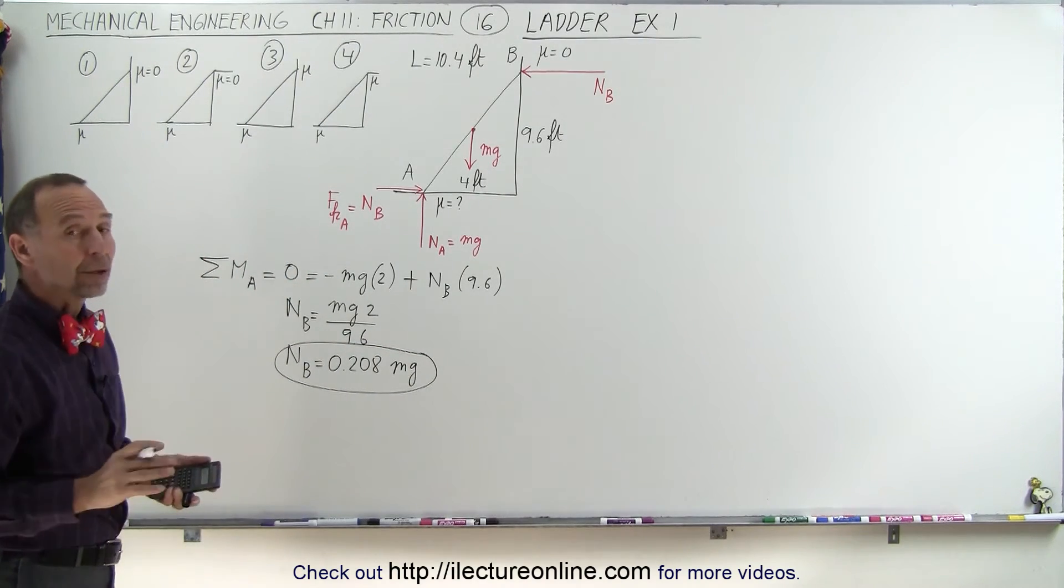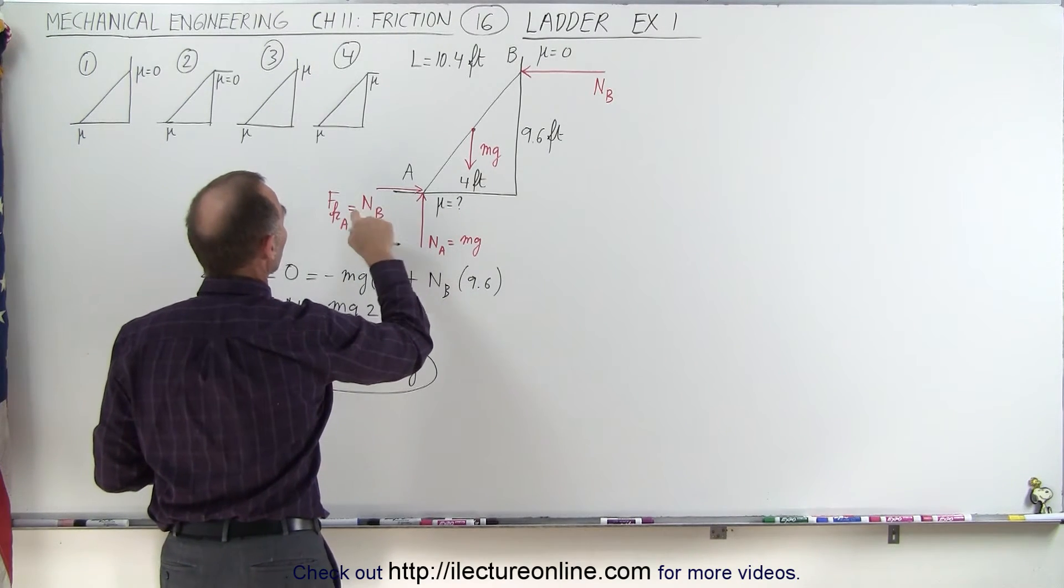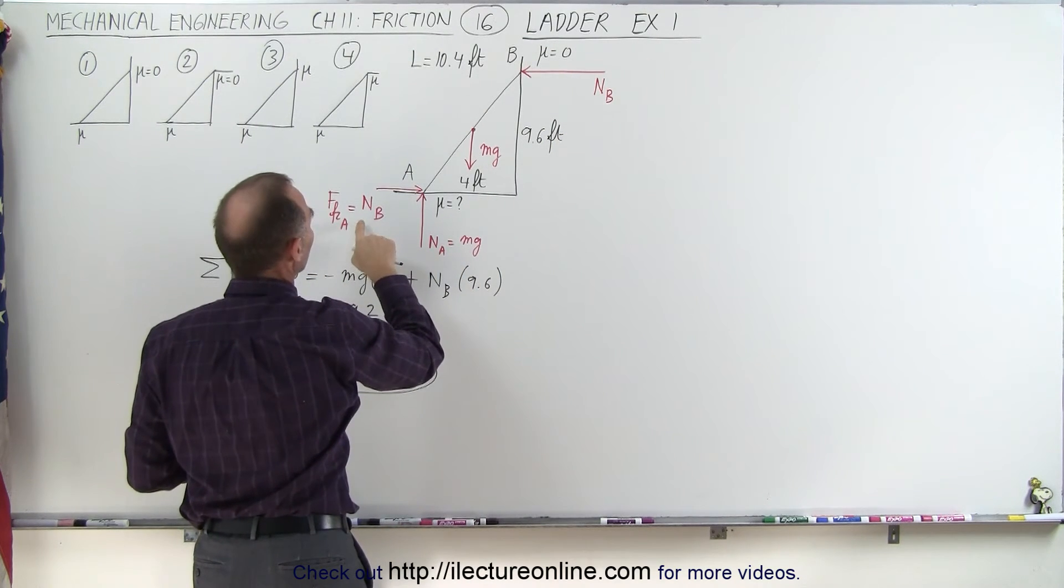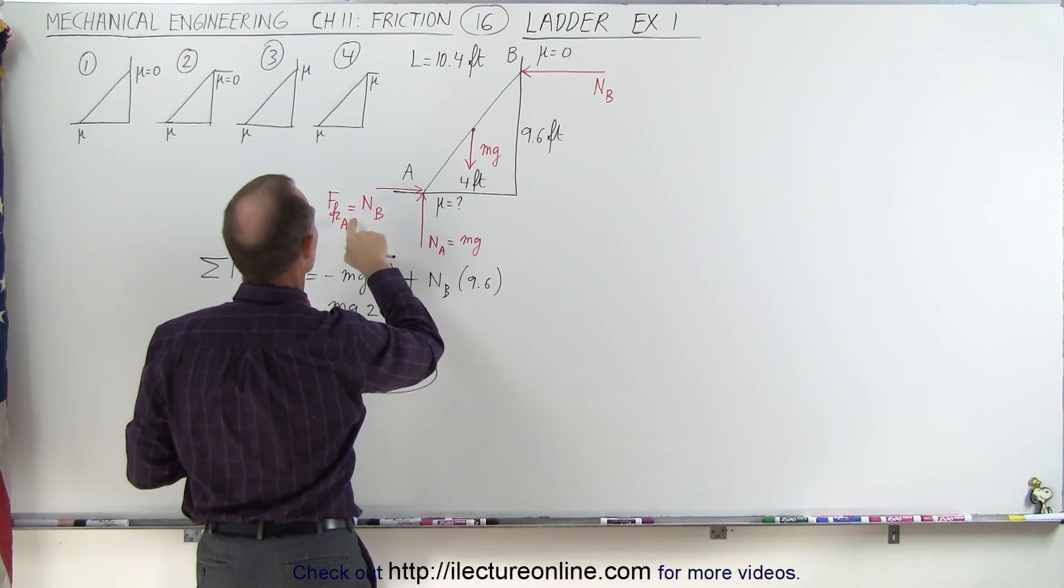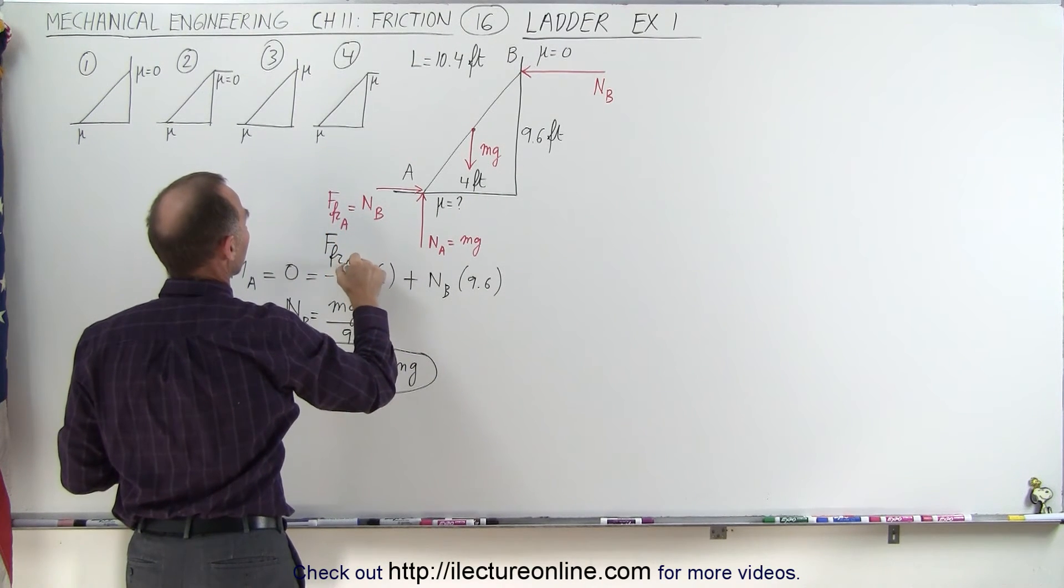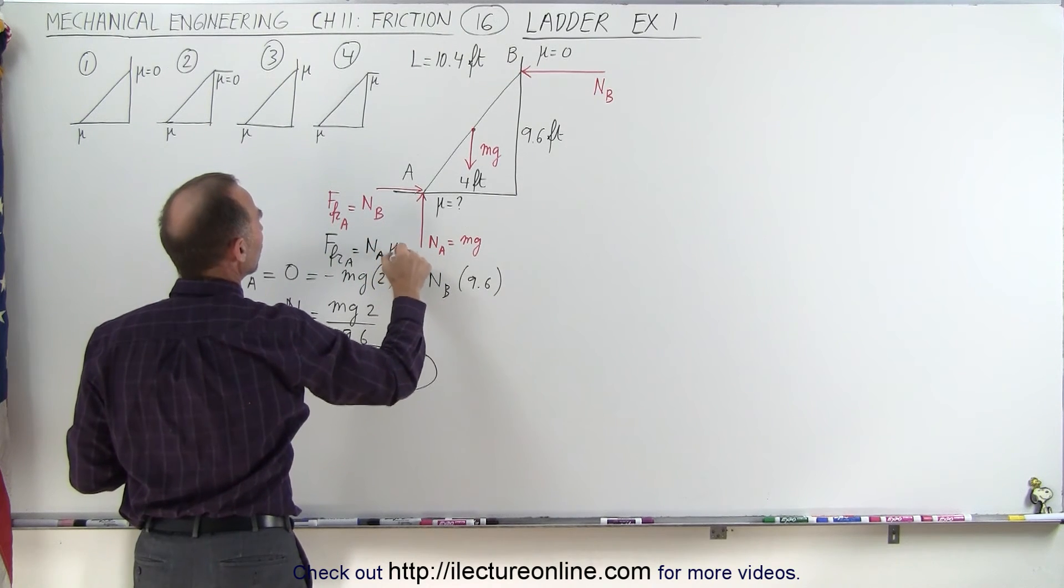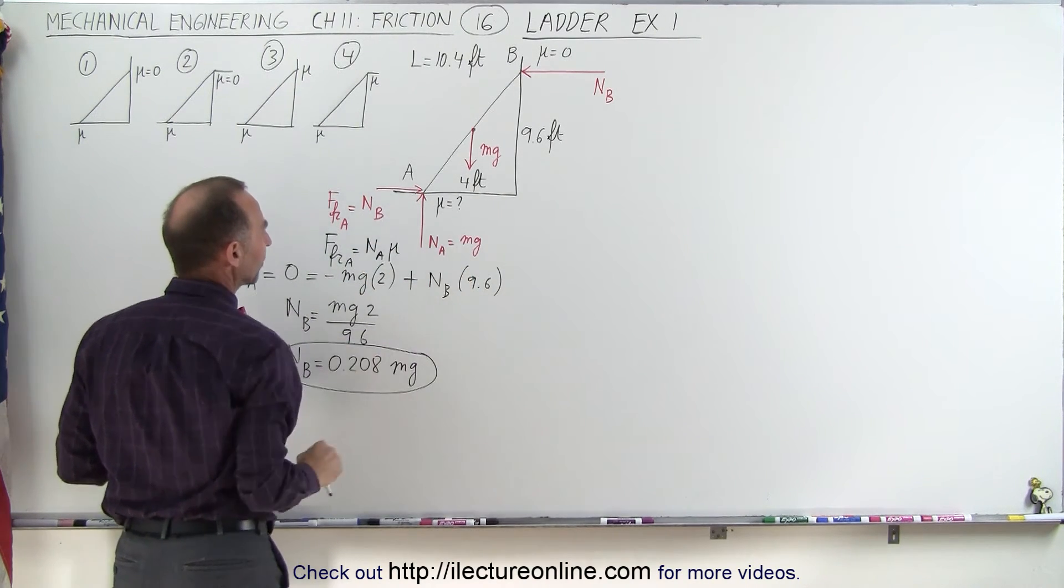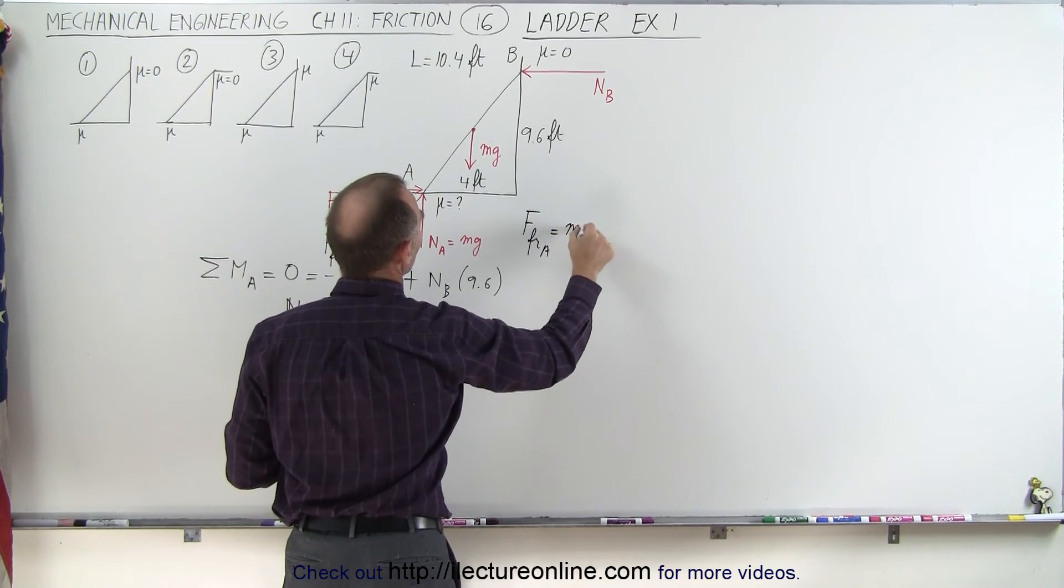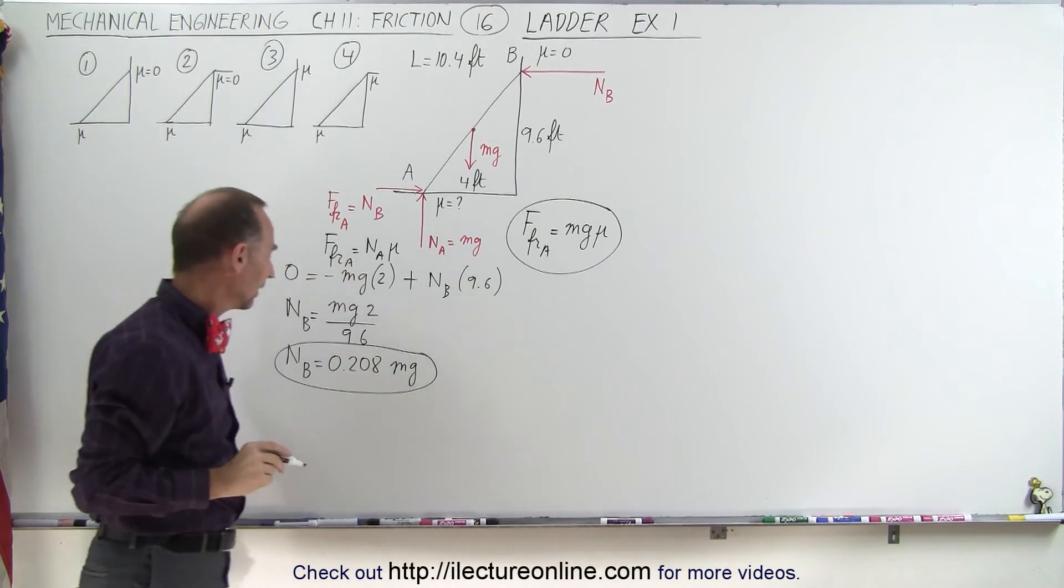Okay, from that, we can now go to the sum of all the forces in the x direction because the friction force should equal Nb. And of course the friction force is equal to, we can also say that the friction force of A is equal to the normal force of A times Mu. And of course, the normal force of A is Mg, so we can say that the friction force of A is equal to Mg times Mu. So we'll go ahead and keep that in case we need it.